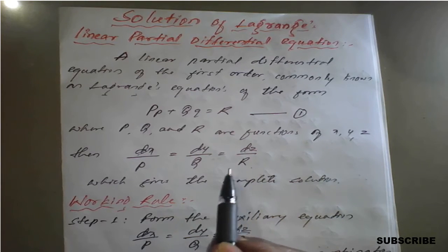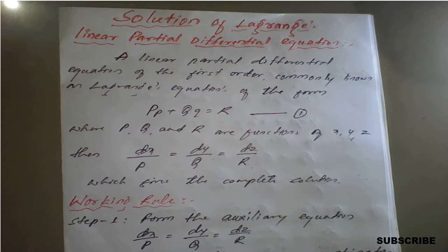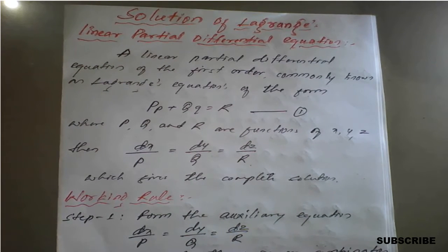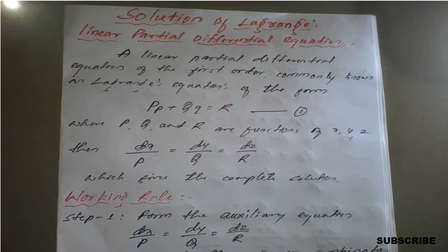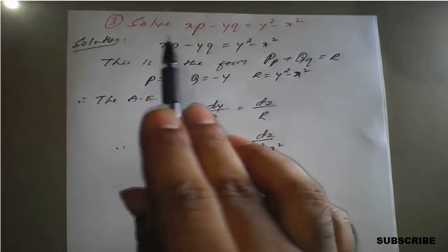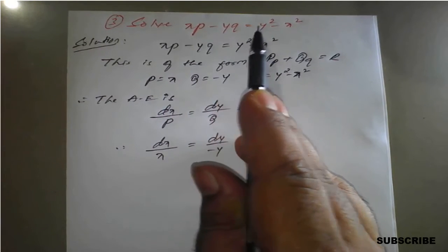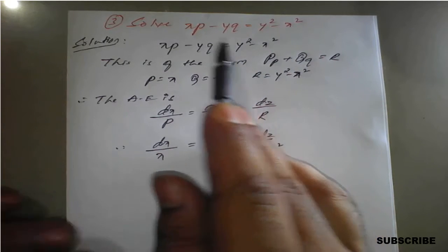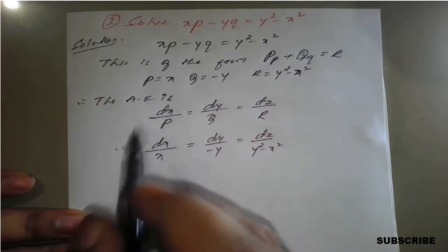Today in this class, we will see cases where one pair is possible to integrate easily, but if you choose another pair, direct integration is not easily possible. In such situations, we need to choose multipliers to get the solution. The question is: solve xp - yq = y² - x². This is a repetitive example in examinations.